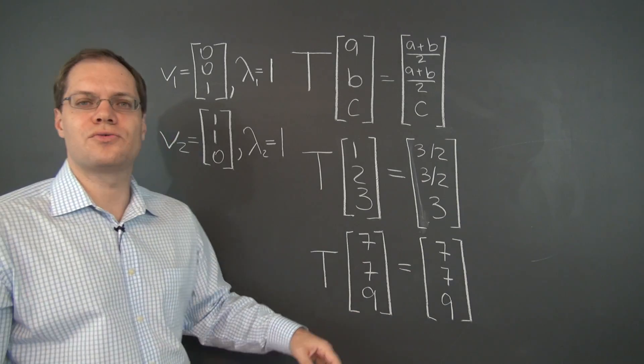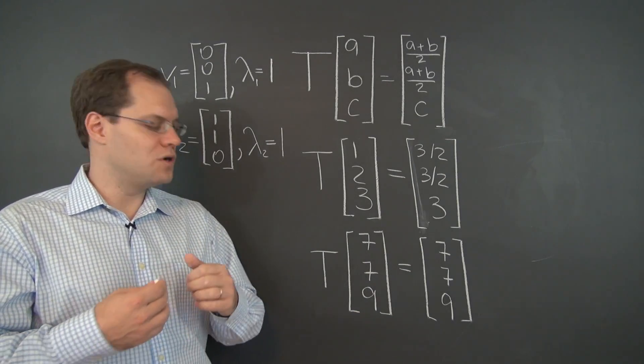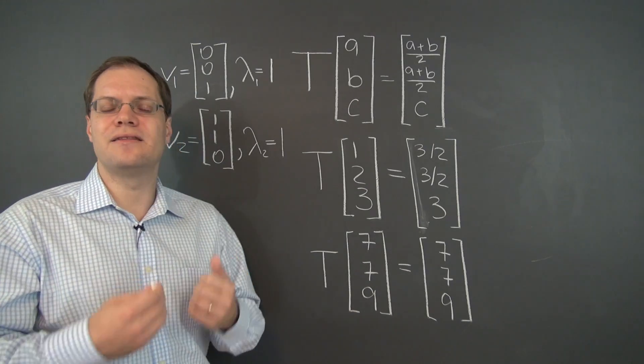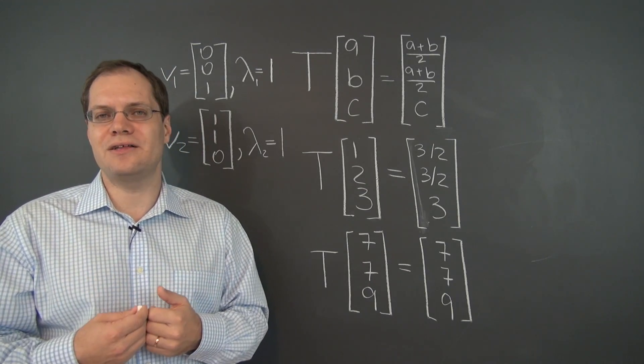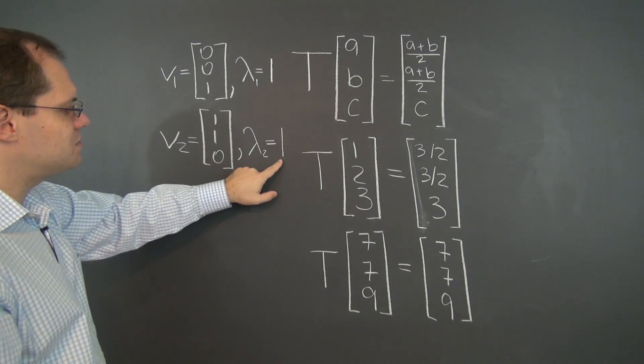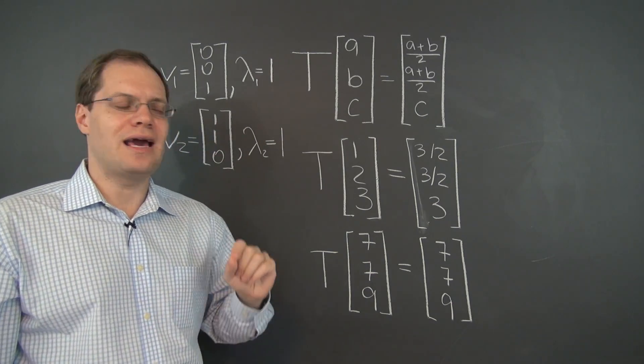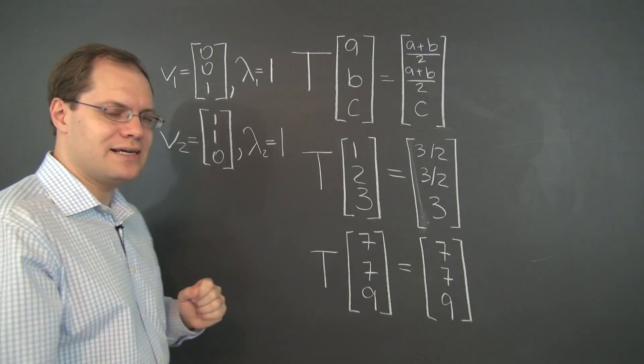So right now, we're just going through a couple examples, but then in a future video, we will specifically discuss this question of multiple eigenvalues and of corresponding eigenspaces. So there's a corresponding eigenspace to the eigenvalue of 1, and it's two-dimensional, and it's spanned by these two eigenvectors.